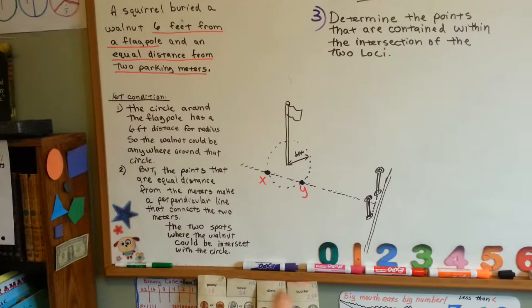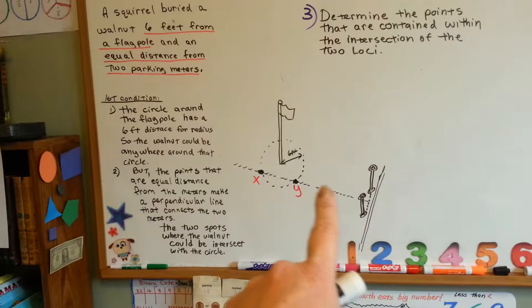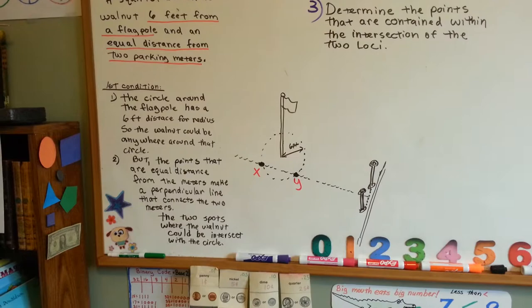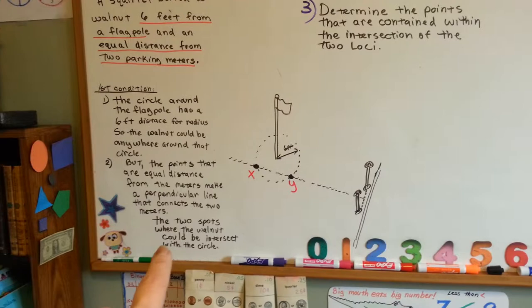So in order to be equal distance from the two parking meters, you draw a perpendicular line connecting the two and then intersecting with the six-foot circle.